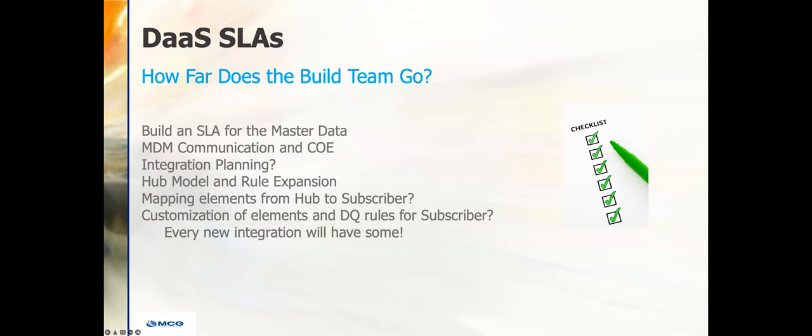The hub model and rule expansion — how far do you go? You got all the known requirements, but when do you draw the line and start to build your model? Every new subscriber will have some additional work — you can't just create a one-day project plan item to get master data. It's going to take some time regardless. Hopefully you are including empowering attributes.